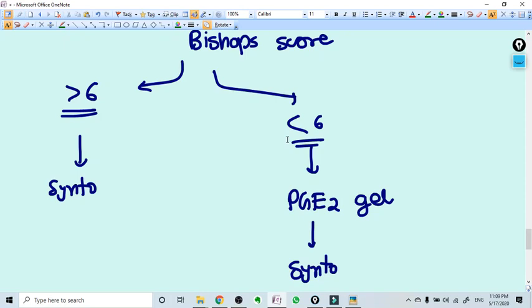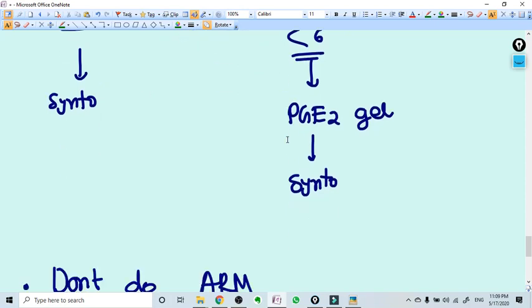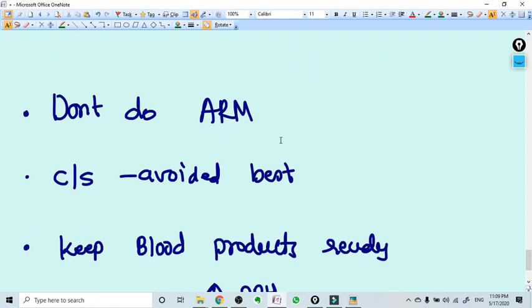If it is less than six, then you need to do cervical ripening with the help of PGE2 gel followed by syntocin.